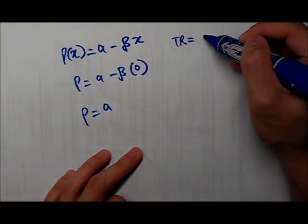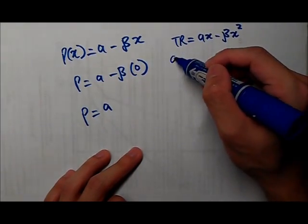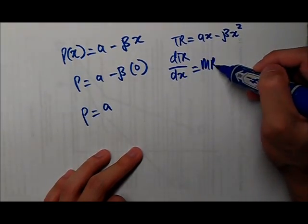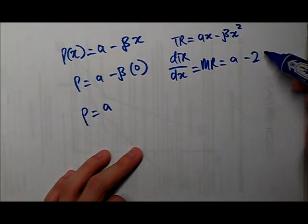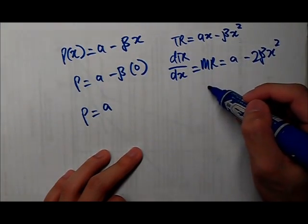You take this multiplied by X. You're going to get total revenue, which is AX minus BX squared. You differentiate this further over here. You're going to get marginal revenue. So, you're going to get A minus 2BX. This is going to be P. That's the formula of the line, the equation.